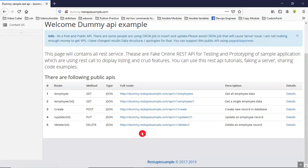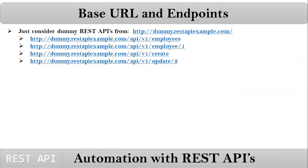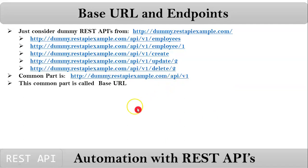Just try to use the existing REST APIs. I've already copied all five REST APIs available for that website. If you observe all of them, there is a common part — that is up to slash v1. This common part is called the Base URL.